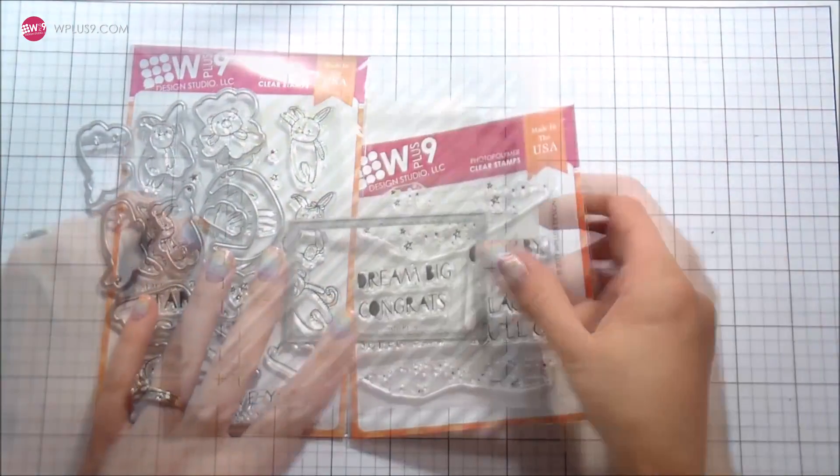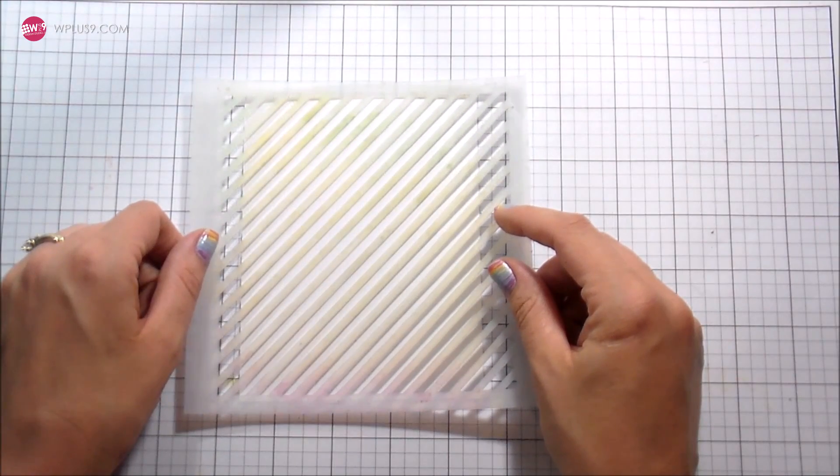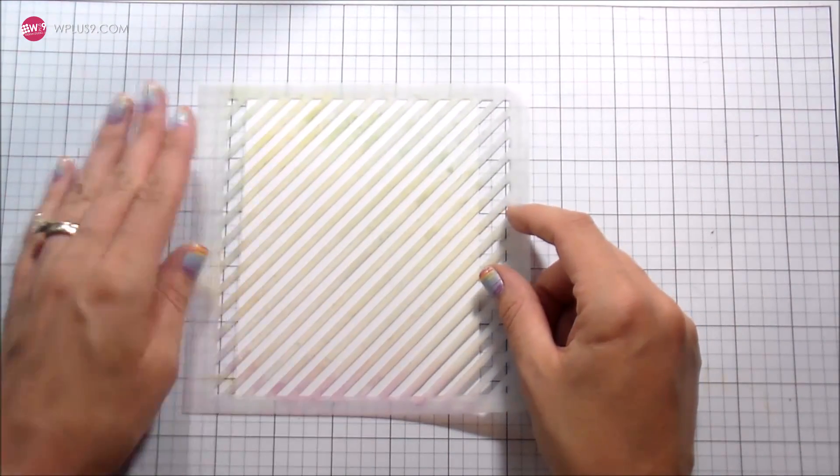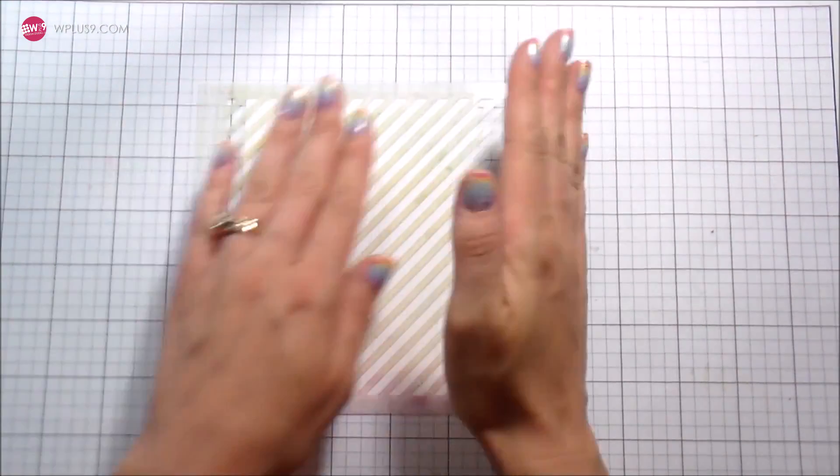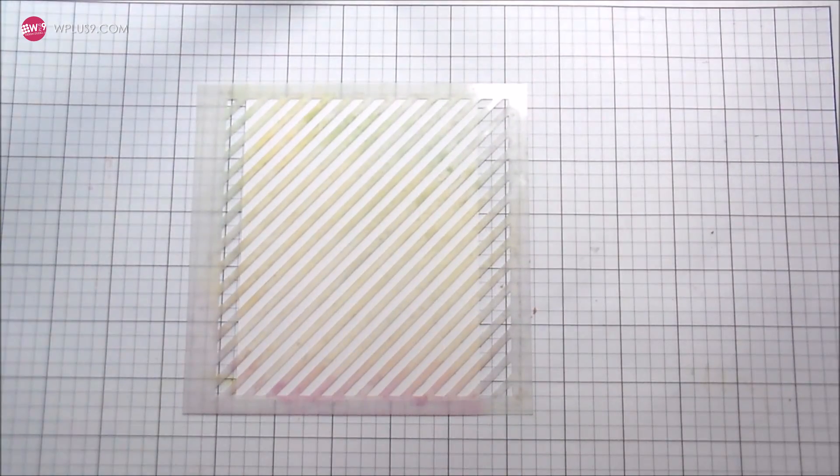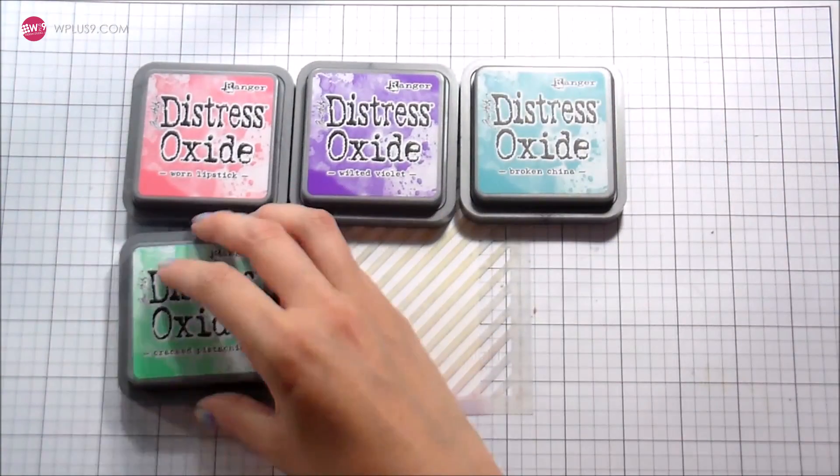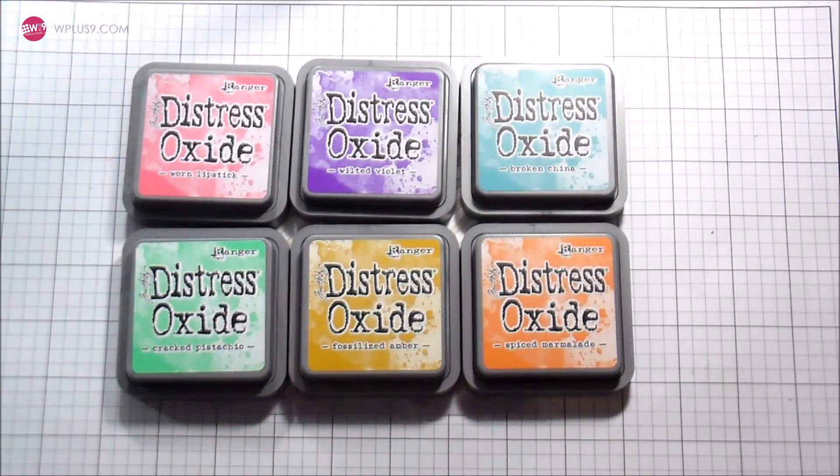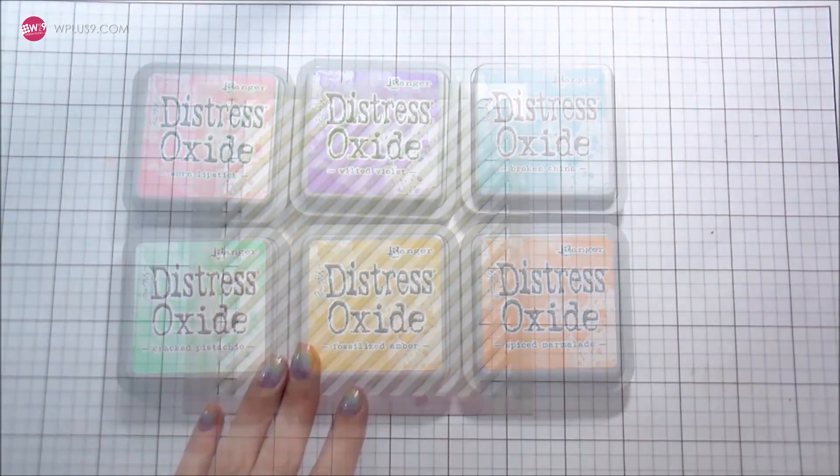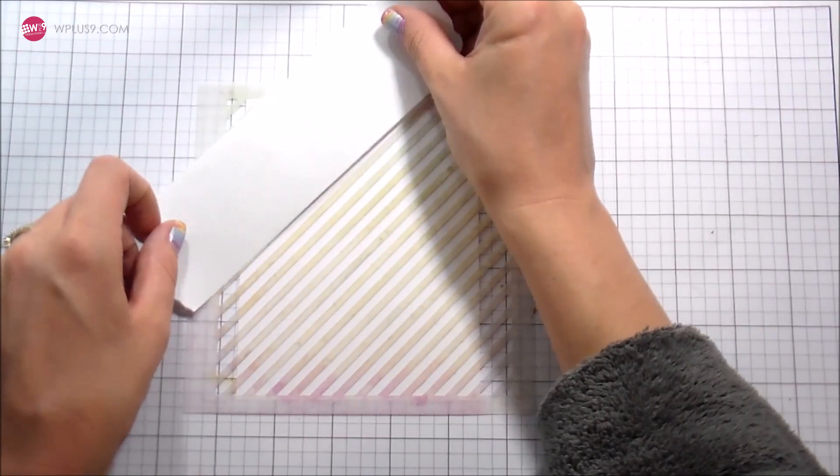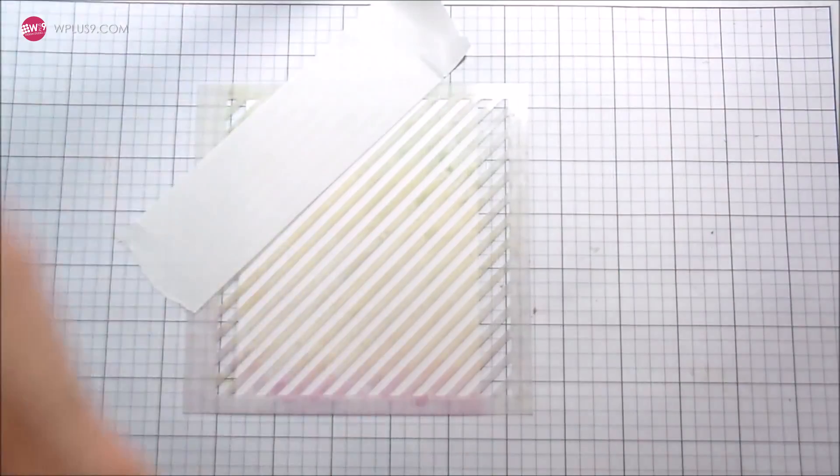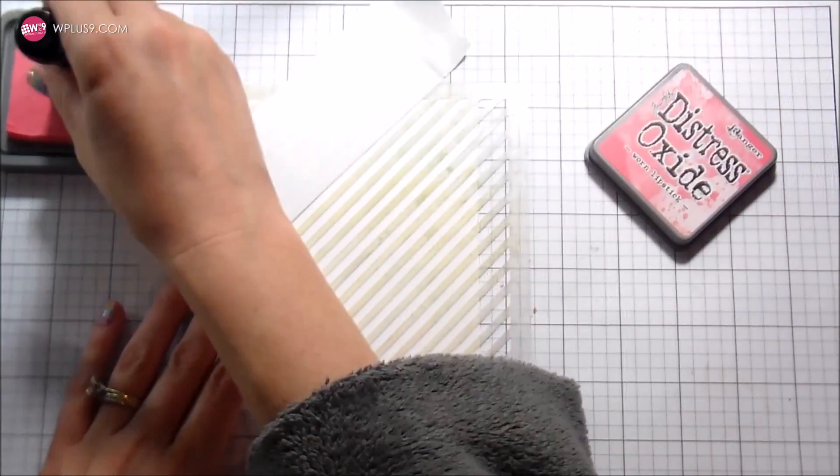We'll use the Stardust stamp set, one of the gift cards layers from the Gift Cards Layers die, and this diagonal stripe stencil. In my head I pictured a soft pastel rainbow situation, but I don't have any pattern paper. I had gobs of it that I had hoarded but I don't have any of it anymore.